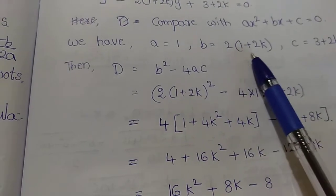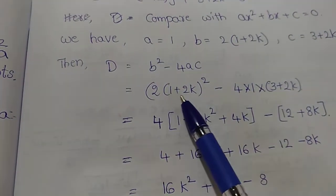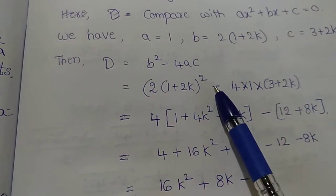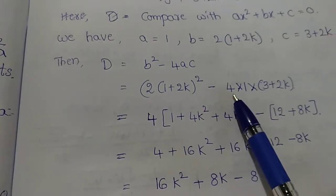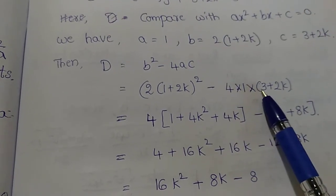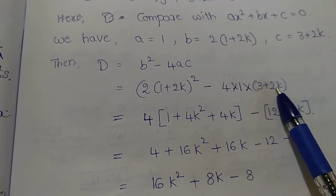Substituting: D equals 2 into 1 plus 2k whole square minus 4 into 1 into 3 plus 2k.